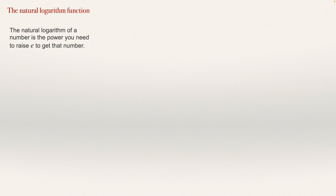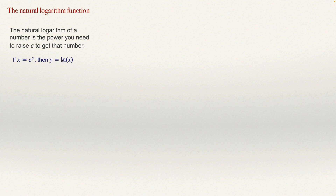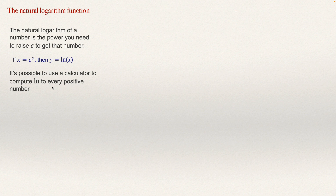The inverse of the exponential function is called the natural logarithm function. The natural logarithm of a number is the power you need to raise e to in order to get that number. For example, if x = e^y, then y is the natural logarithm of x. The number x must be positive, since e to the power y is always positive, so only positive numbers have a natural logarithm.